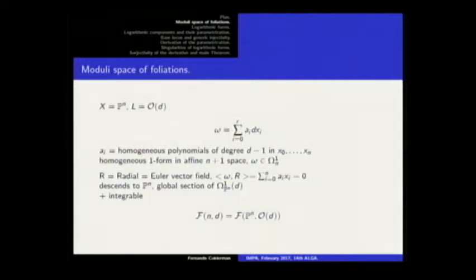In the case of projective space, our forms are written as follows. I prefer to use notation where the degree of the form — which I call D — means the polynomials have degree D minus one, so the total degree is D because the dxi's have degree one. This omega defines a section of Omega^1 twisted by D. If it descends to projective space, the coefficients have to satisfy the condition that contraction with the radial vector field is zero. This is our space of foliations.